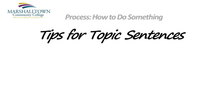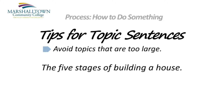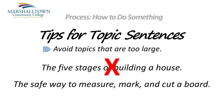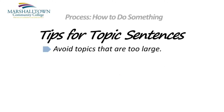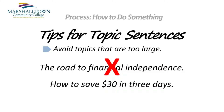Another important consideration when writing your topic sentence is to make sure your topic is small enough to write about in one paragraph. For example, this topic sentence — the five stages of building a house — might be fine for a full-length article or even a book, but the topic is much too large for a single paragraph. A better topic sentence for this assignment might be: The safe way to measure, mark, and cut a board. Or how about: The road to financial independence? Probably not manageable in one paragraph. A better choice might be: How to save $30 in three days.